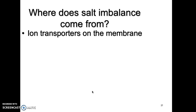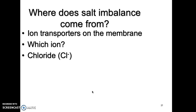It's ion transporters on the membrane. We've been talking about being able to reach that equilibrium or disequilibrium of each solute. What if we have the failure to transport one of those solutes? What if one of those carriers is malfunctioning? When we talk about cystic fibrosis, we're talking about one specific ion, and that ion is chloride.